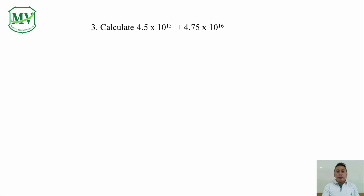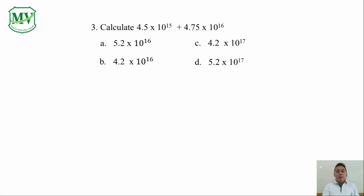Number 3. Calculate 4.5 x 10 raised to the power of 15 plus 4.5 x 10 raised to the power of 16. The choices include: 4.2 x 10 raised to the power of 16, 4.2 x 10 raised to the power of 17, and 5.2 x 10 raised to the power of 17.